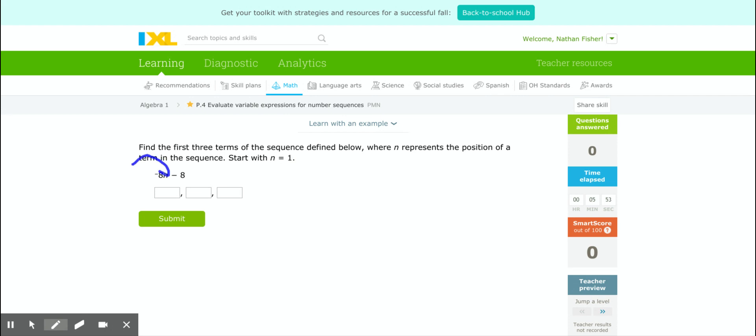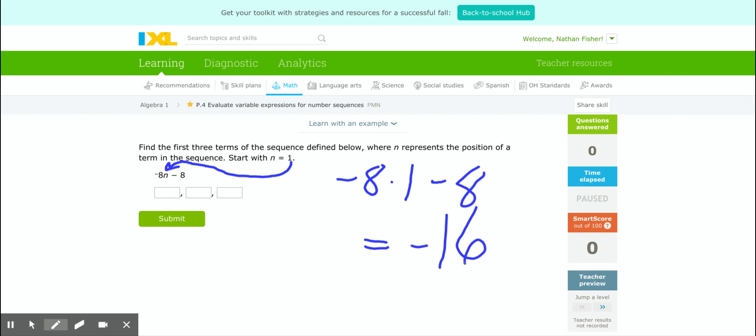All it means is whatever they tell you to start with, that's going to be the thing that plugs in for n right off the bat. So if I plug in 1 there, what am I going to have? Well, I'm going to have negative 8 times 1 instead of times n, then minus 8. Remember, order of operations, that multiplication comes first. Negative 8 times 1 is still negative 8. Minus 8 again gets you negative 16. So that's what I'm going to put in my first box then.